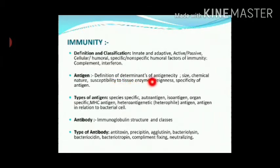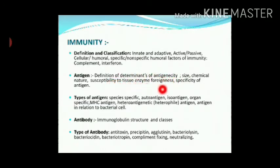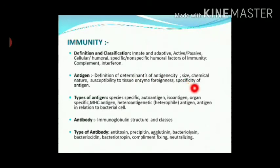Then definition and determinants of antigenicity — its size, its chemical nature (it may be protein, it may be lipoprotein), then susceptibility to tissue enzymes, foreignness — which is also a very important characteristic — and specificity. These are the characteristics of the antigen. Then types of antigen, species-specific — certain antigens are particularly specific for certain species.